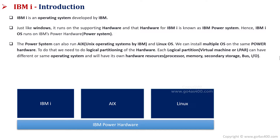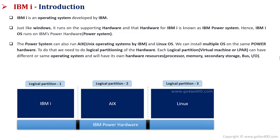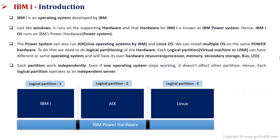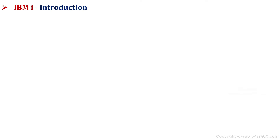We can install multiple operating systems on the same Power hardware. To do that, we need to do the logical partitioning, that is LPAR, of the hardware. Each logical partition can have a different or same operating system and will have its own hardware resources. Each partition works independently — even if one operating system stops working, it doesn't affect the other partitions. Hence, each partition operates as an independent server.